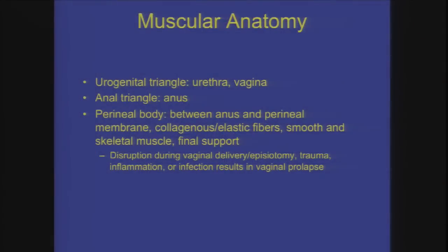Muscular anatomy is extremely important because over time, even if you have initial visceral or organ pain related to the bladder, uterus, or ovaries, because of viscerosomatic convergence, you may develop muscle contraction reflexes. You may have heard the term pelvic myalgia or pelvic floor muscle pain — people tend to get very tight. It's helpful to review some of the muscular anatomy of the pelvic floor.